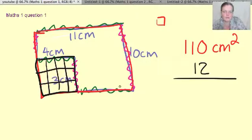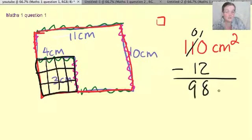So we take the big rectangle and we take away the little rectangle. Naught to take away two we can't do, borrow. 10 take away two is eight, 10 take away one is nine. I make that 98 centimeters squared.